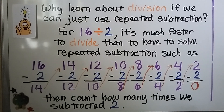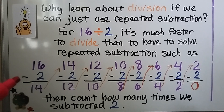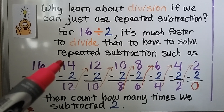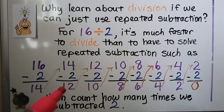So why learn about division if we can just use repeated subtraction? Well, for 16 divided by 2, it's much faster to divide than to solve repeated subtraction. For example, starting with the dividend 16, we do minus 2, which is 14. Then 14 becomes our new number to subtract 2 from, and we get 12.